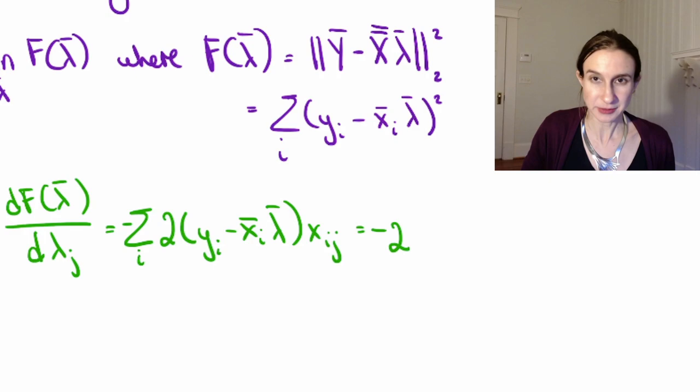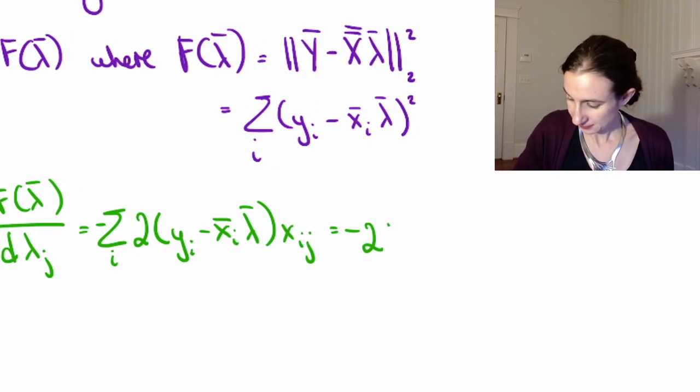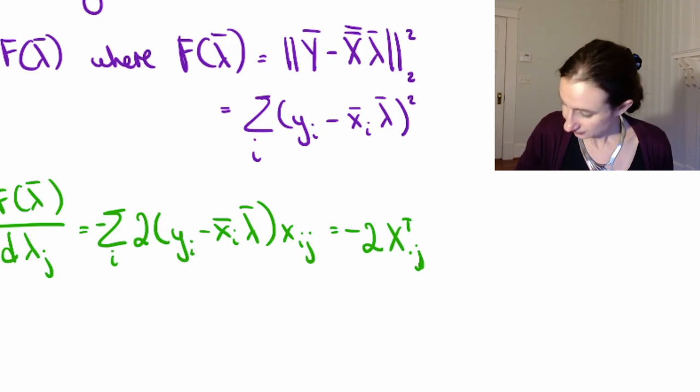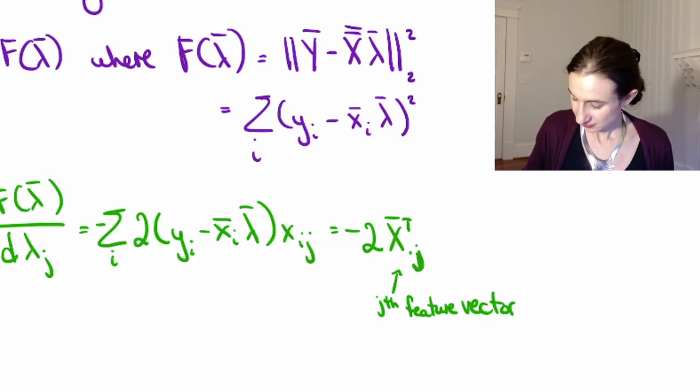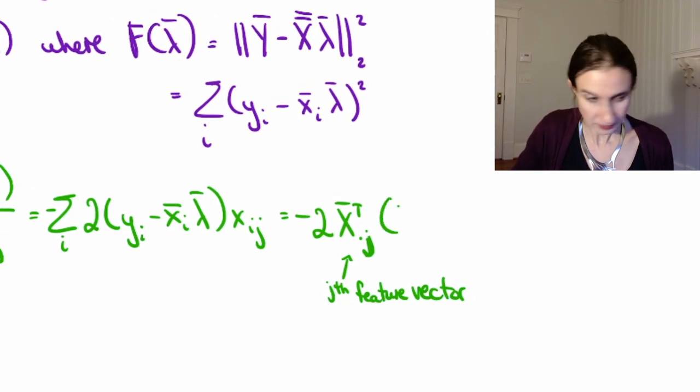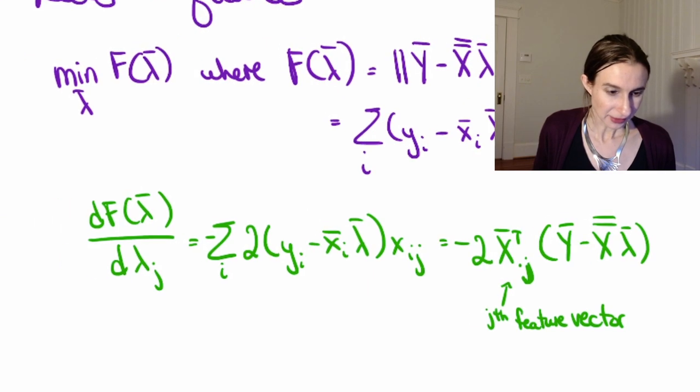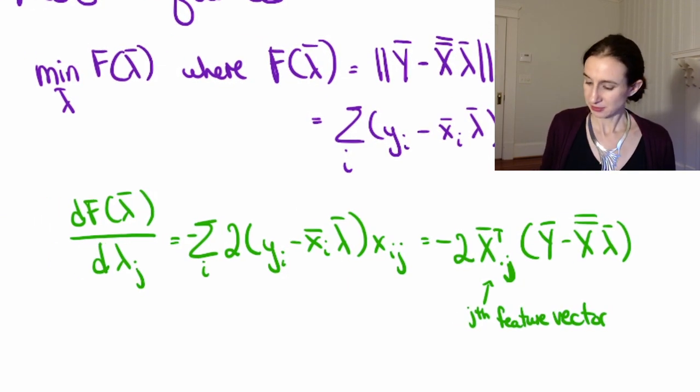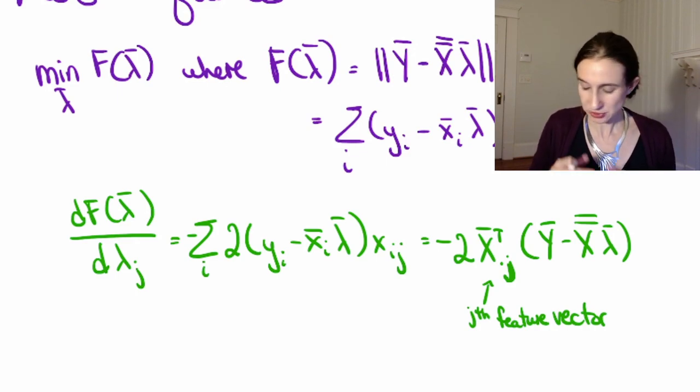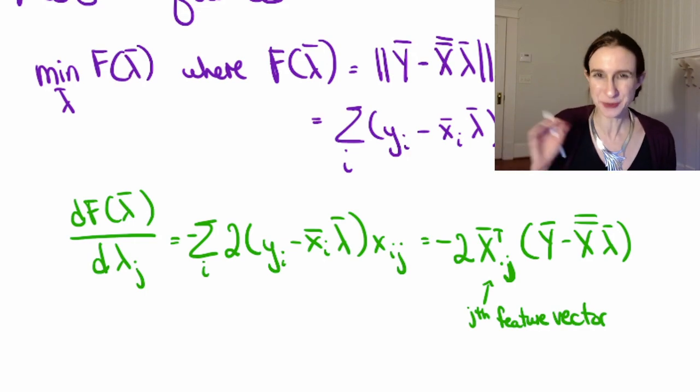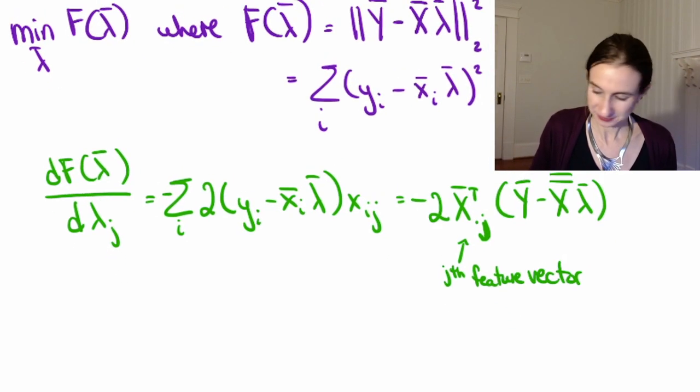Okay, so now I'm going to put it back into matrix notation here. That's just the jth feature vector. There. Okay, so now I'm going to create the gradient, and that's going to get set equal to zero in a minute. So the gradient means just stack all this in terms of j, and now it's easy because I've done one coordinate. The rest is very easy.